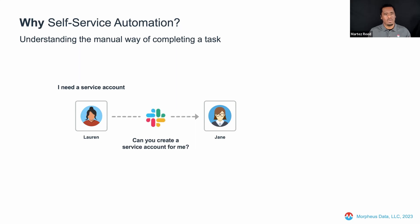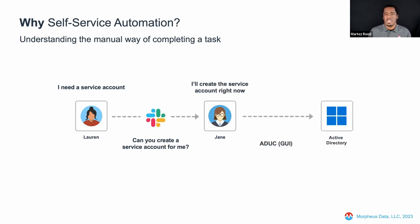Lauren sends Jane a Slack message: can you create a service account for me? Jane says sure, I'll go ahead and create that service account right now. Jane then logs into Active Directory Users and Computers and creates the service account for Lauren.